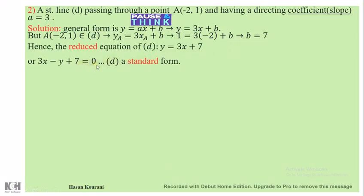If you are asked to find a standard form, you must rearrange these terms to get the standard form: 3x - y + 7 = 0. This is also the standard equation of d.